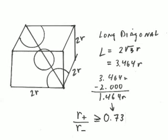How big does the center ion have to be to hold the corners of the simple cube apart? The cube of larger ions means each edge is 2r of the larger ion. The long diagonal through the center is therefore 2√3 r, giving 3.464r. Subtracting 2r for the corner radii leaves 1.464r as the diameter of the inner sphere. So the smaller ion has to be at least 73% the size of the larger ion to fit into that hole and keep the corners apart. If it's smaller than that, the corners will be in contact, which is unfavorable.